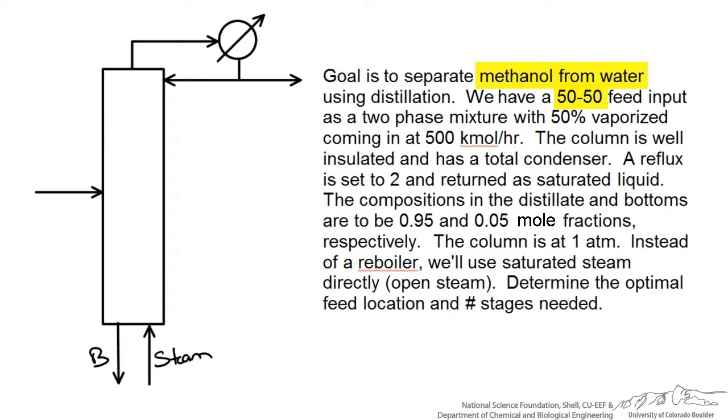We have an equal molar water and methanol mixture entering our distillation column in which 50% of it is vaporized. We are given information about the column in terms of operating conditions and the compositions we want coming out of the top and bottom. Instead of a reboiler we will use saturated steam directly, which is also known as open steam heating or open steam distillation. We want to determine the optimal feed location and the number of stages needed.